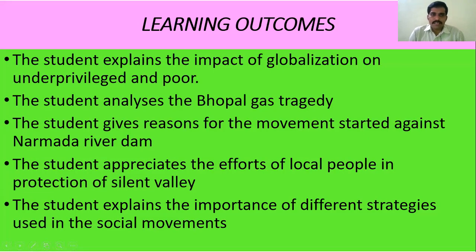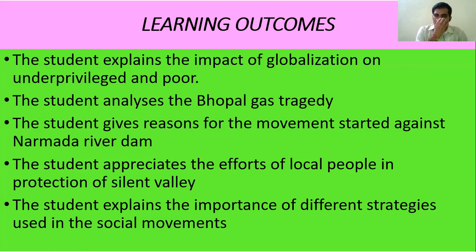Learning outcomes: The student explains the impact of globalization on underprivileged and poor people. The student analyzes the Bhopal gas tragedy — its reasons and consequences. The student gives reasons for the movement started against the Narmada river dam. The student appreciates the efforts of local people in the protection of Silent Valley, and explains the importance of different strategies used in social movements.